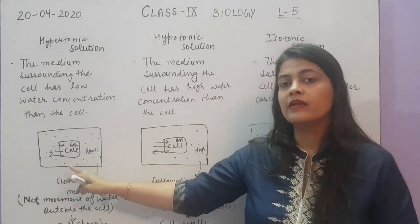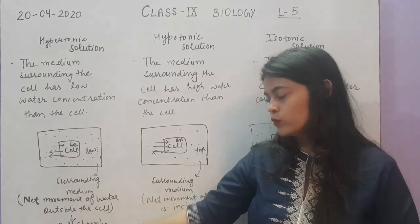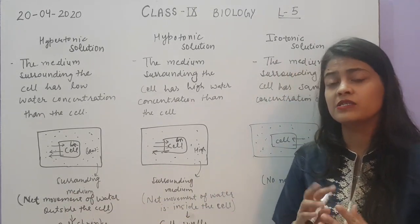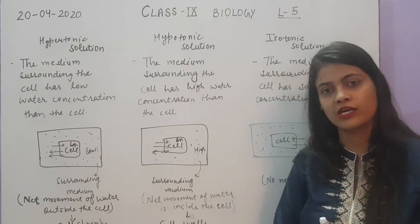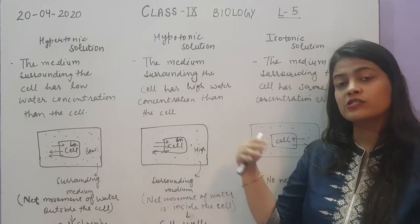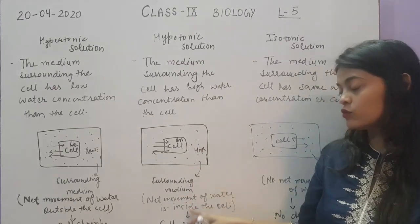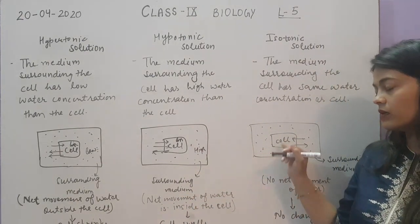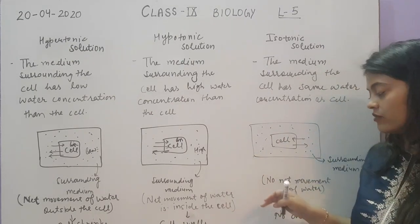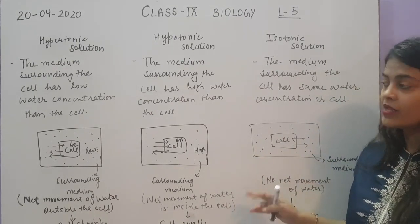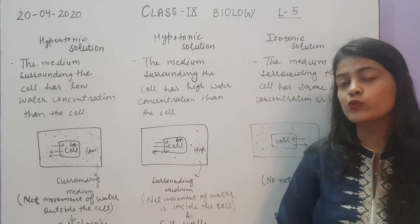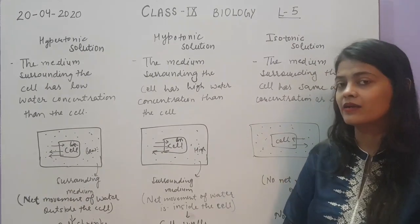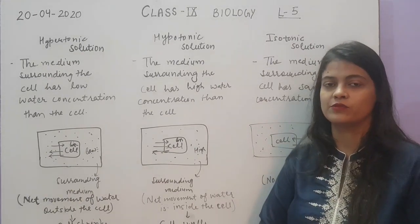To summarize: in hypertonic solution, there will be net movement of water molecules outside the cell, so the cell will undergo shrinkage. In hypotonic solution, water moves in and the cell will swell up. In isotonic solution, movement inside and outside is the same, so there will be no change in the cell. There are also two activities in your book related to this, which we will discuss to make these three types of solutions more clear.